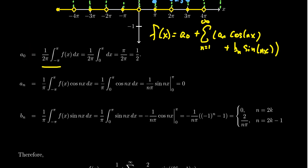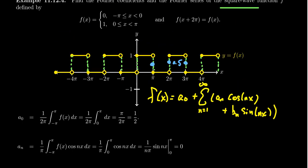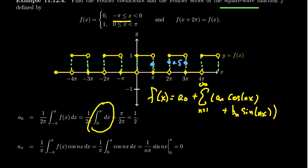The formula for a₀ is 1 over 2π times the integral from negative π to π of f(x) dx. Because our function is piecewise, the part from negative π to 0 is just 0 and disappears. From 0 to π, f equals 1, so the integral simplifies to the integral of 1 from 0 to π, which gives π. So a₀ equals π over 2π, which simplifies to 1/2. This isn't surprising — the Fourier series should equal 1/2 at the jump discontinuity, consistent with the convergence theorem.